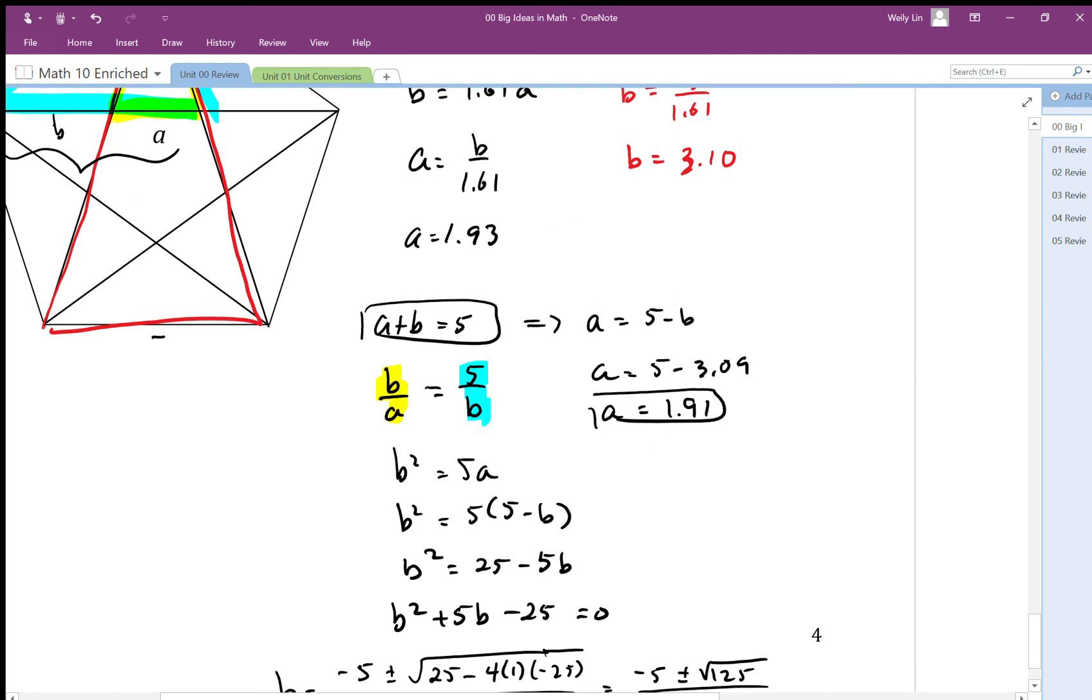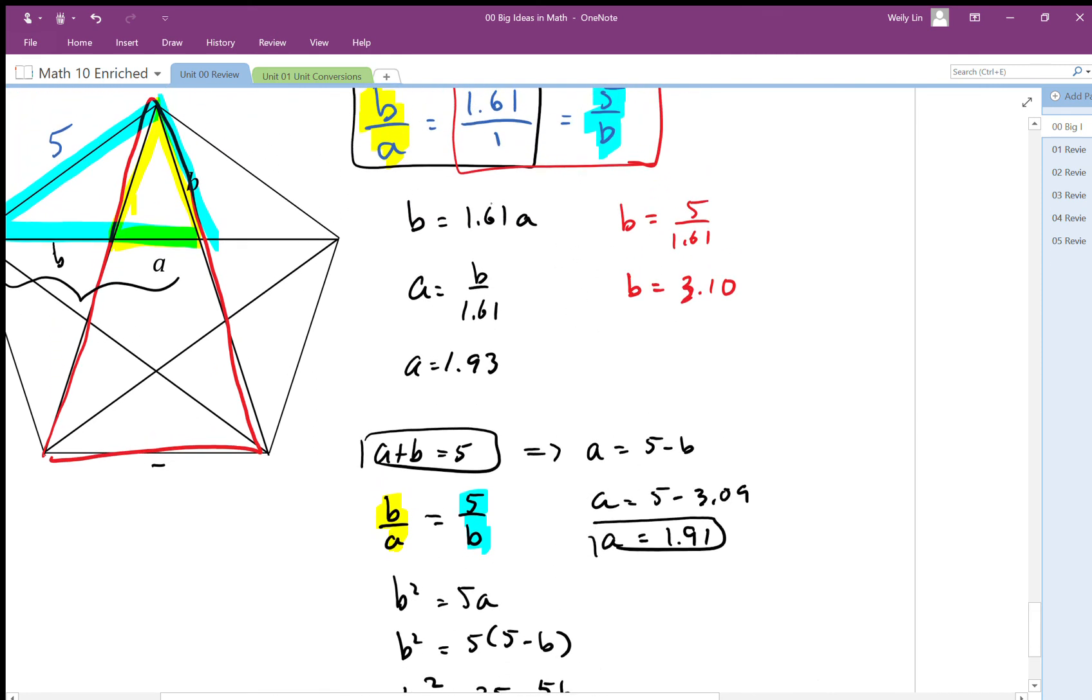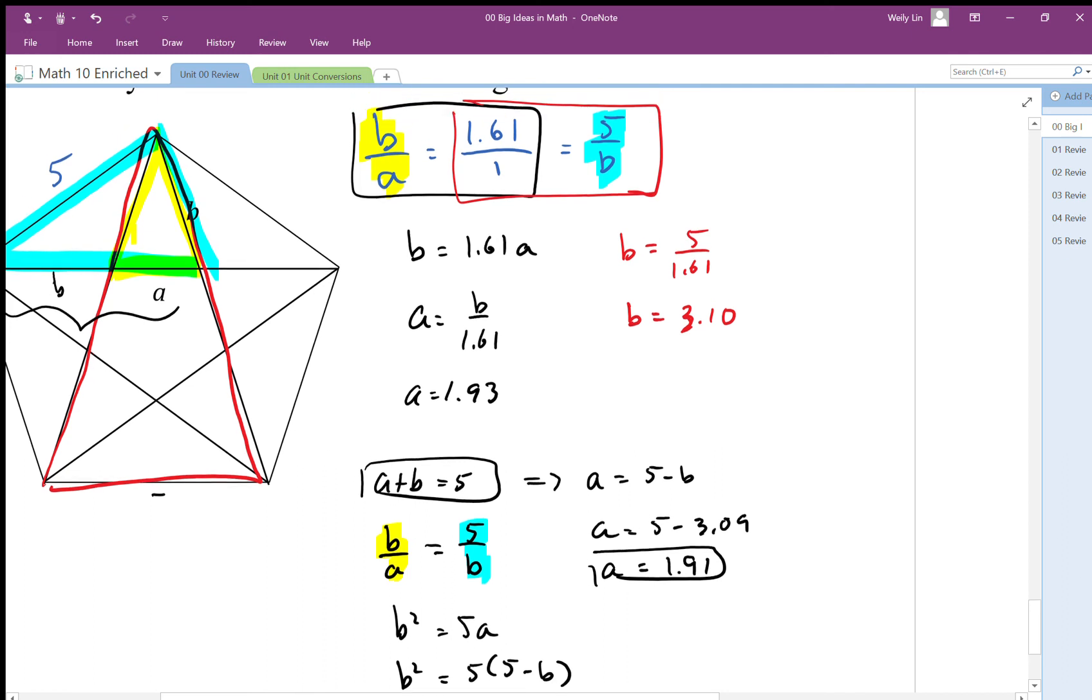That's because the estimation for phi, or our golden ratio, was a little bit off.